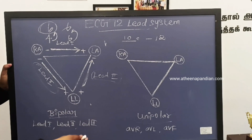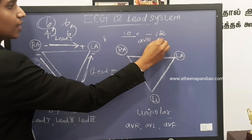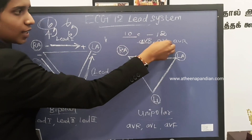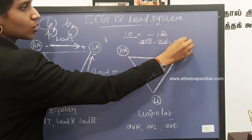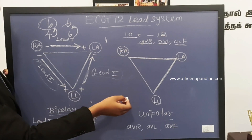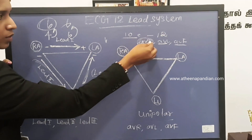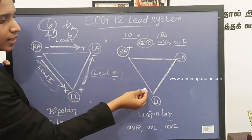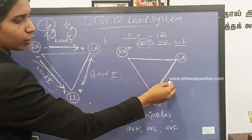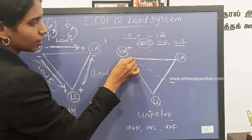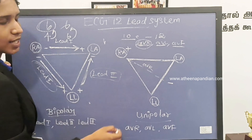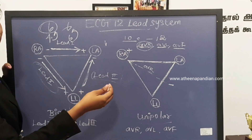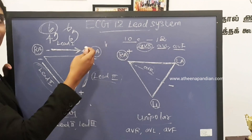The unipolar electrodes are AVR, AVL, and AVF — which means augmented vector right, augmented vector left, and augmented vector foot. In augmented vector right, we take the right arm as the positive pole, and the negative pole is taken as an average between the other two electrodes. Through that, we take an ECG waveform of AVR. This augmented vector right waveform shows the viewpoint of the upper right side of the heart.